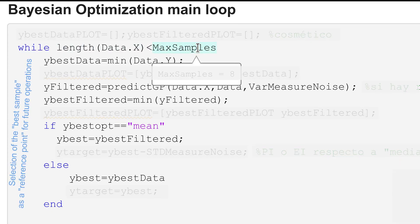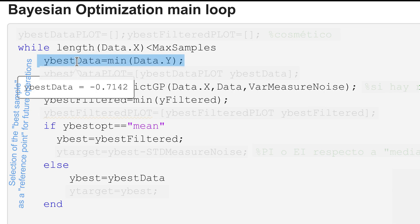So the thing is that we have two options to consider what is my best sample in order to output it as a final result or in order to compute a probability of improving over it or the expected improvement. The first most naive one would be my best sample is the minimum of my function evaluation samples if we are going to minimize.